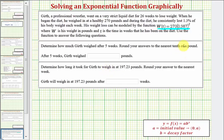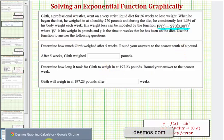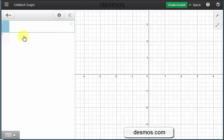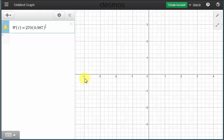So let's go to Desmos.com and enter in our function. We can use the same notation, w of t. So w of t equals 270, then in parentheses, 0.987. Right arrow, we want to raise this to the power of t, so we press shift six, and then t. Now we can go ahead and press enter.